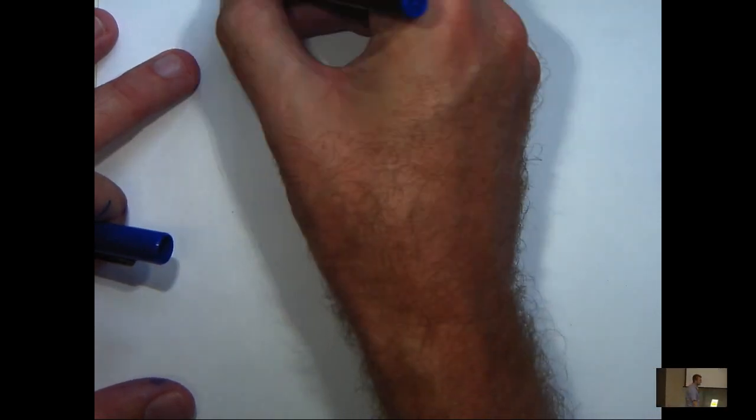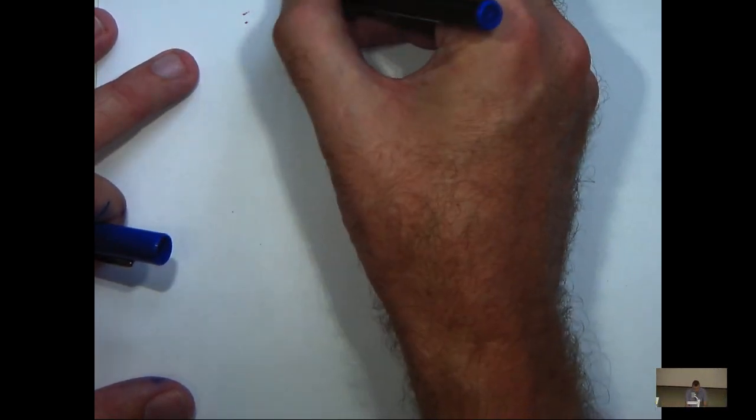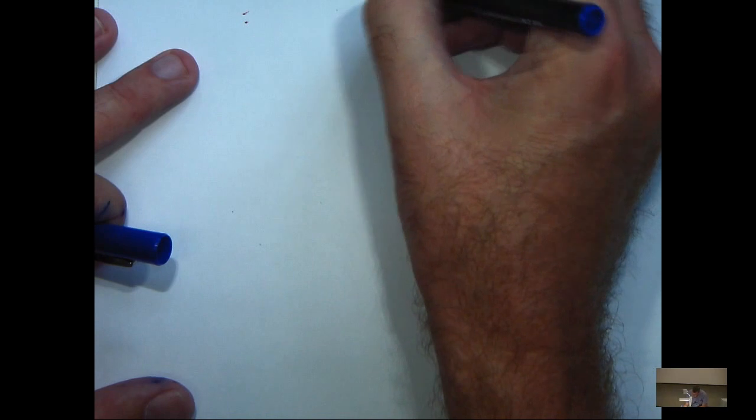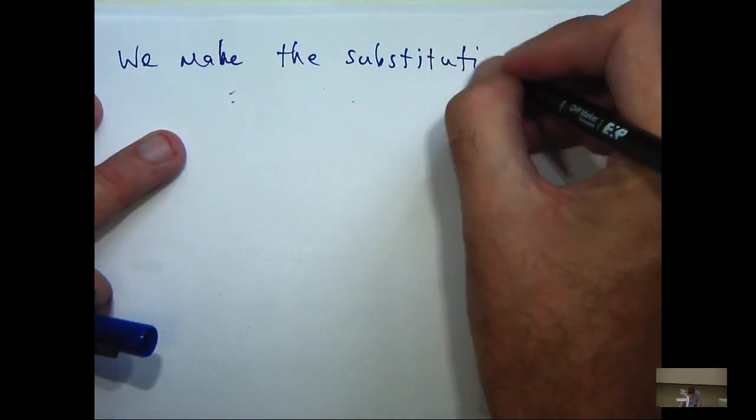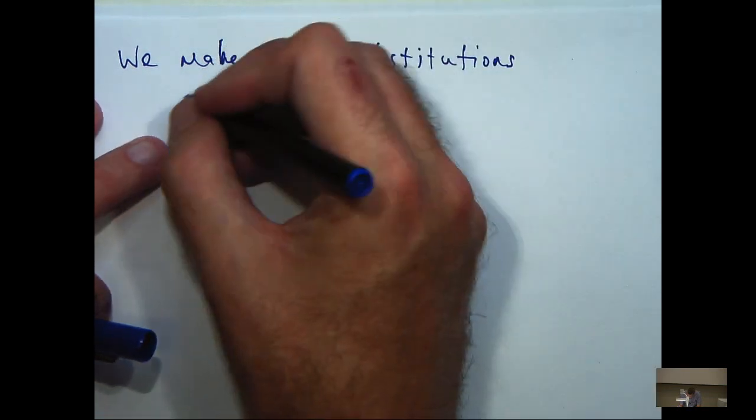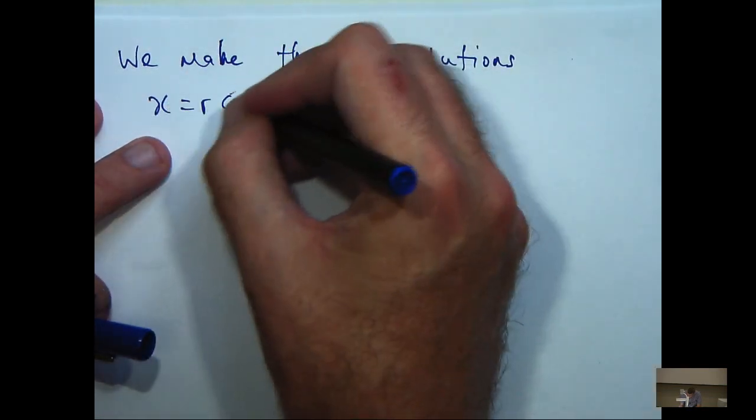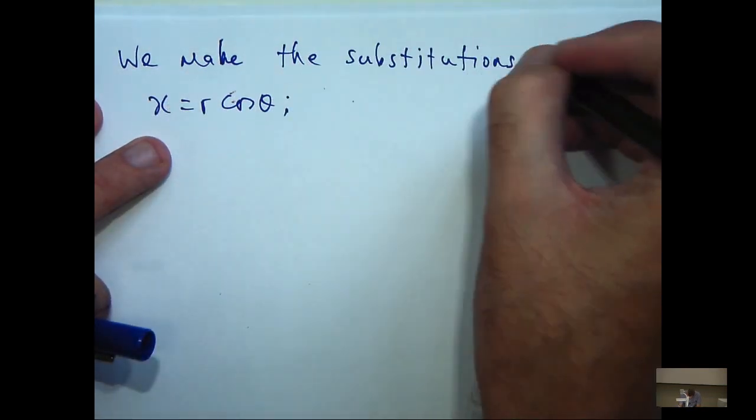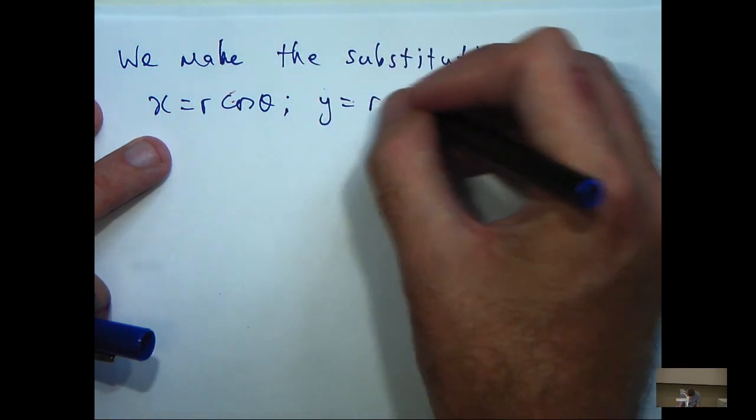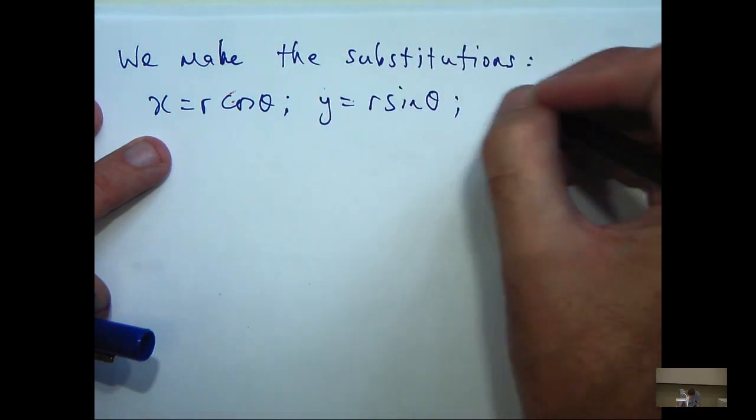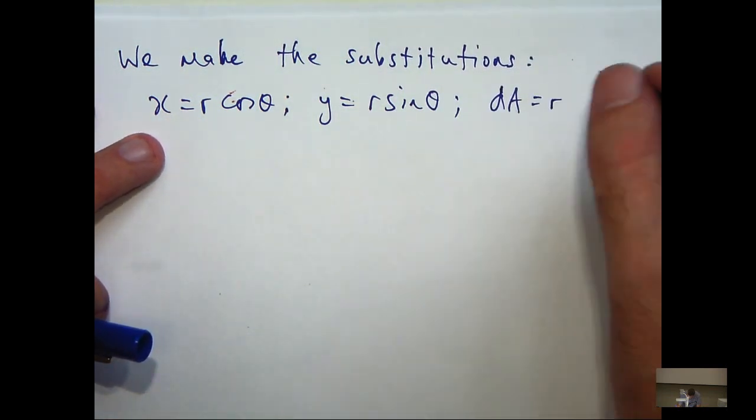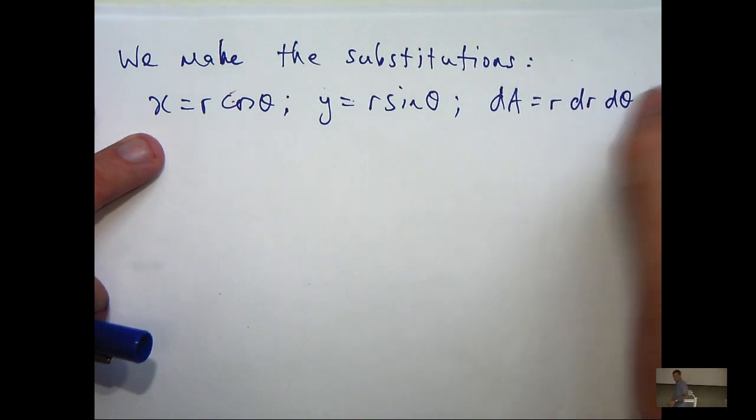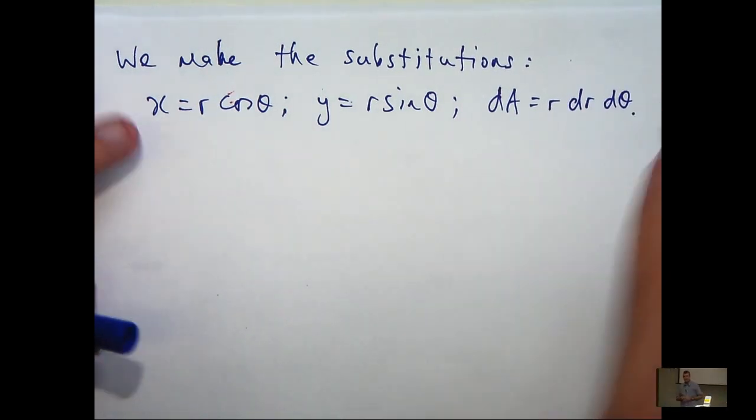So this is the substitution. We make the substitutions, x equals r cos theta, y equals r sin theta, and dA, which can represent dx dy or dy dx, it's just the area element, gets replaced with r dr d theta.